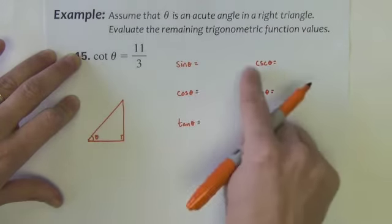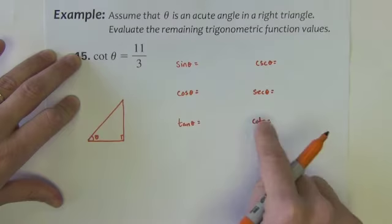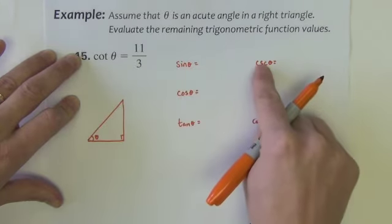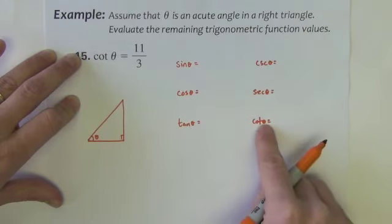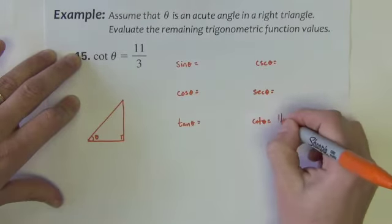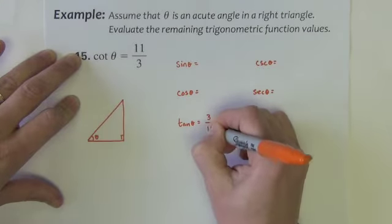I really do recommend writing them like this. I think if you write them like this after a few times you'll easily remember which ones are reciprocals of each other if you kind of pair them like this. I know cotangent is 11 thirds which means tangent is 3 elevenths.